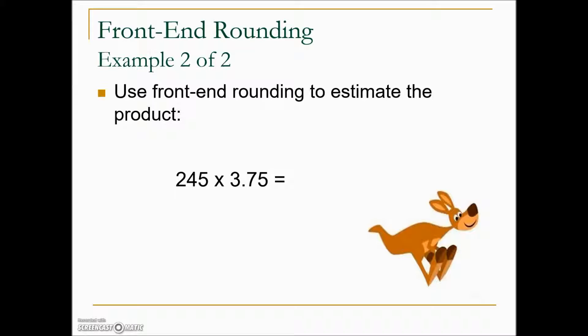Here's another example of front-end rounding for a ballpark estimate: you're buying 245 items that cost $3.75 each — approximately what will this value equal? 245 front-end rounds to 200, since the four isn't enough to alter the two. $3.75 front-end rounds to $4.00, since the seven is enough to alter the three. Two times four is eight, add your two zeros, giving an approximate value of $800.